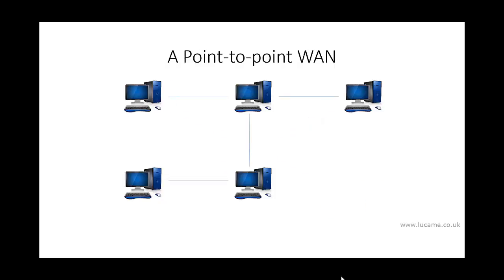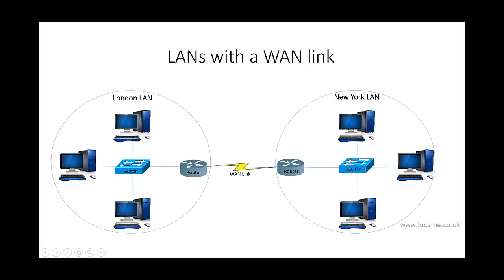By contrast, WANs are characterized by point-to-point links between hosts. WAN technologies are often referred to as point-to-point technologies. Nowadays WANs are rarely used to connect end stations directly — typically they provide the long-distance links between routers, allowing remote LANs to communicate with each other. For example, a London LAN and a New York LAN within the same organization might be connected via a WAN link in the middle.